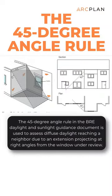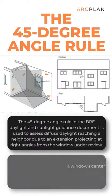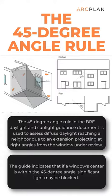The 45 degree angle rule in the BRE daylight and sunlight guidance document is used to assess diffuse daylight reaching a neighbour due to an extension projecting at right angles from the window under view. The guide indicates that if a window centre is within the 45 degree angle, significant light may be blocked.